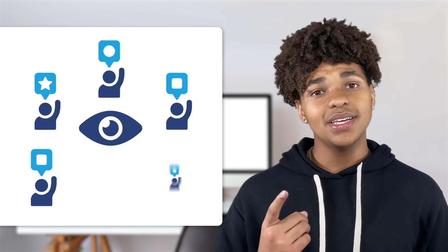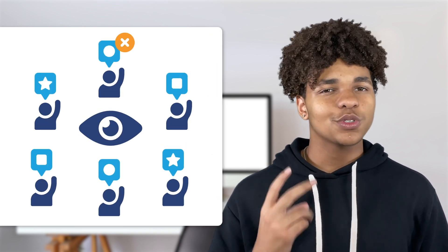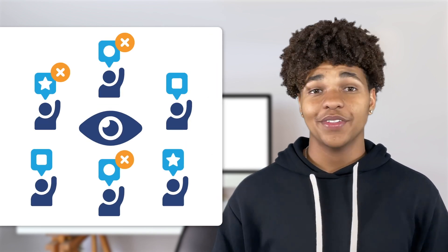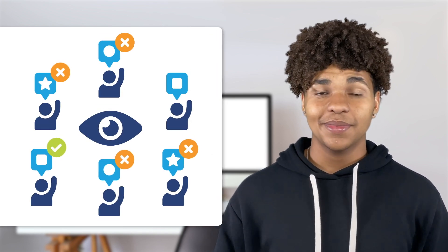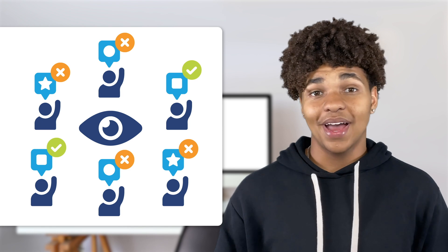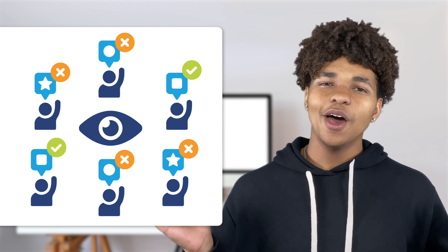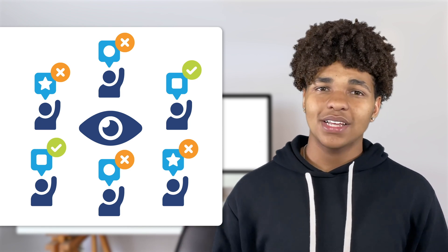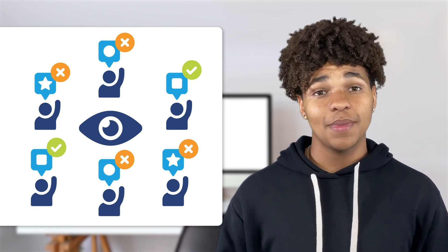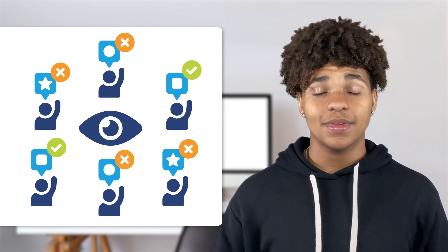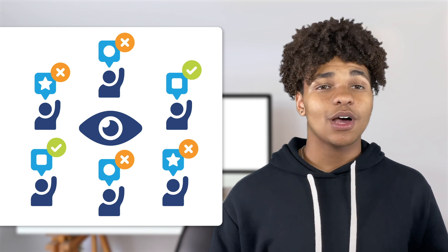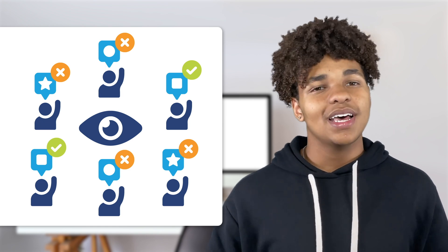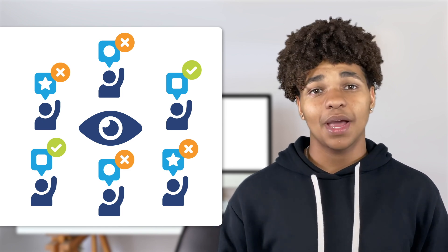Bias is a tendency to believe that certain ideas, individuals, or groups are better than others. All humans are biased — we can't help it, but we can learn to identify biases and do our best to manage them. Today's topic is algorithmic bias, a kind of bias in AI models.